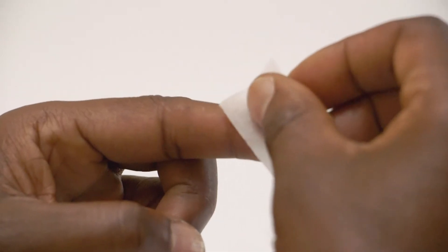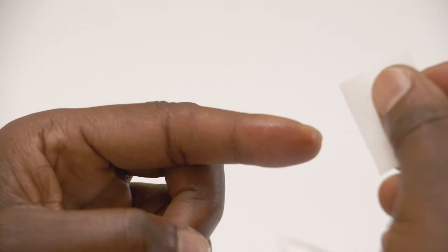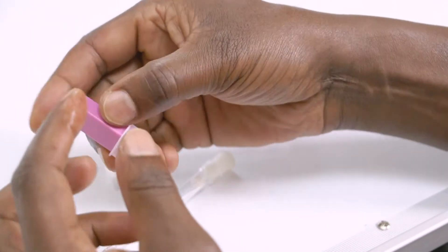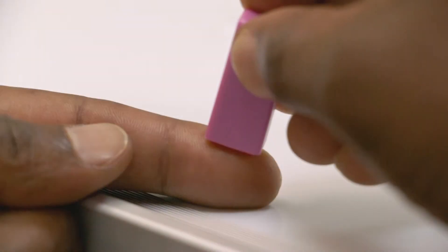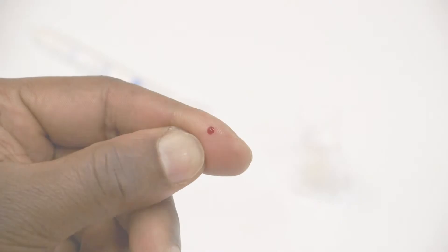Clean finger with alcohol swab. Uncap the safety lancet. Break your skin and squeeze out the first drop of blood. Wipe away first drop of blood with sterile gauze pad.